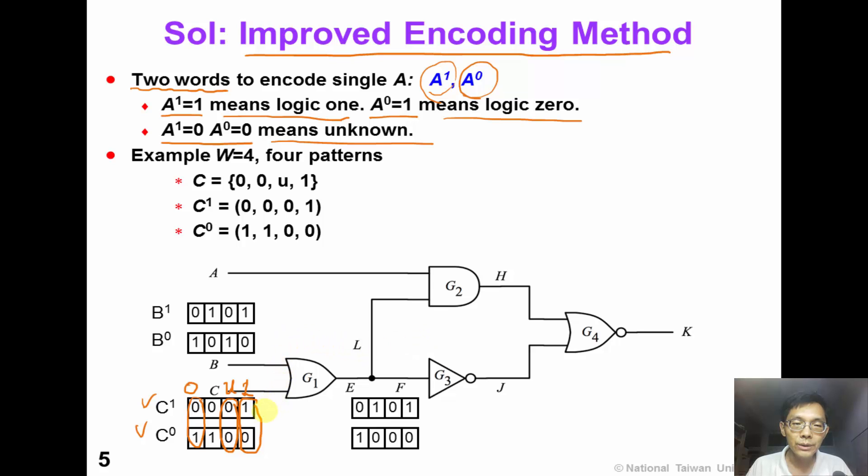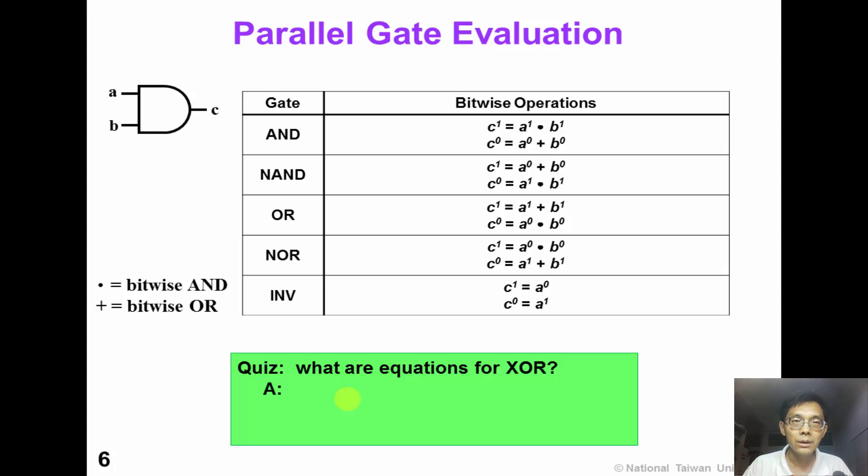So how do we use this encoding to evaluate a gate? In this table, we show how to evaluate a gate using the improved encoding. For example, for this AND gate, we have A and B as gate input, C is the gate output. We can use a bitwise operation to obtain the output. C1 equals A1 bitwise AND B1, and C0 equals A0 bitwise OR B0.